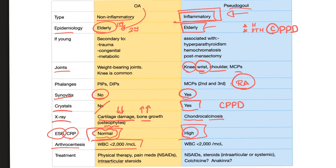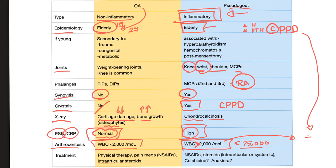Arthrocentesis: the white blood cell count in osteoarthritis is less than 2,000. In pseudogout, white blood cell count is more than 2,000 but less than 75,000. A count of 75,000 or more indicates septic arthritis, not inflammatory arthritis. The CPPD crystals are weakly positive birefringent — when parallel to the plane of polarized light, they appear blue.